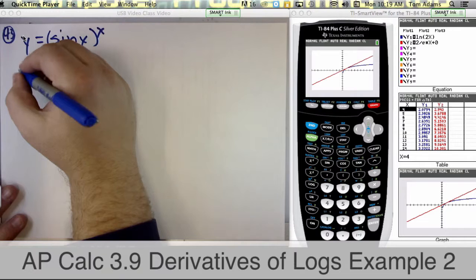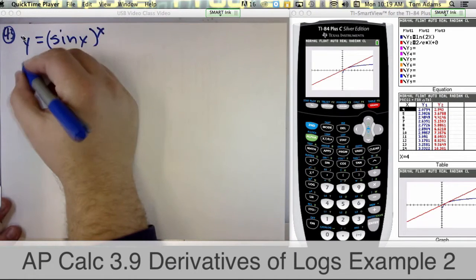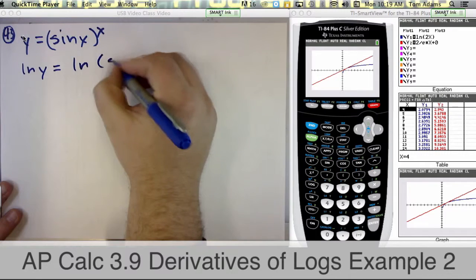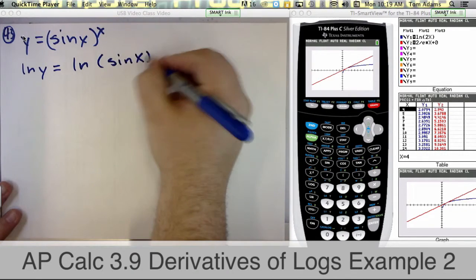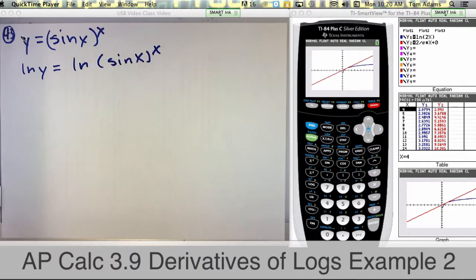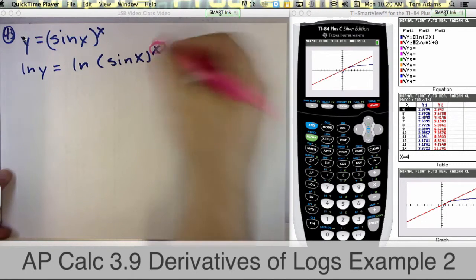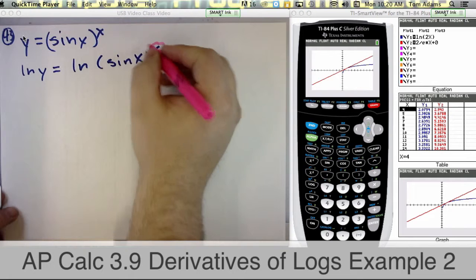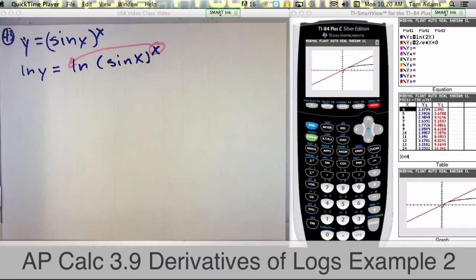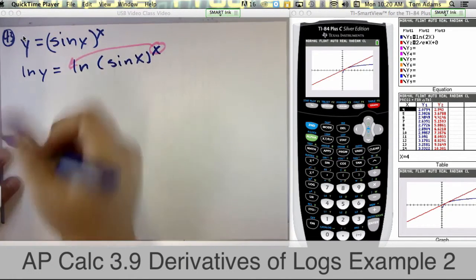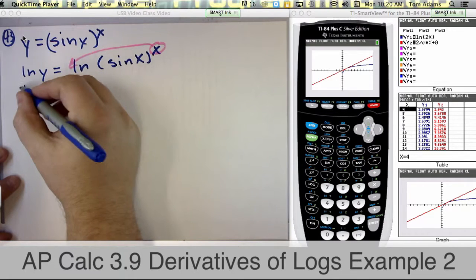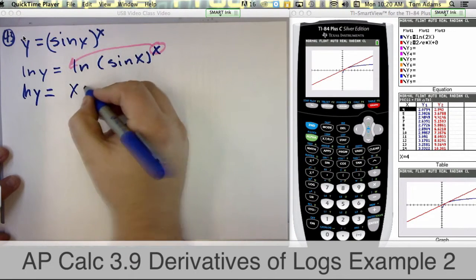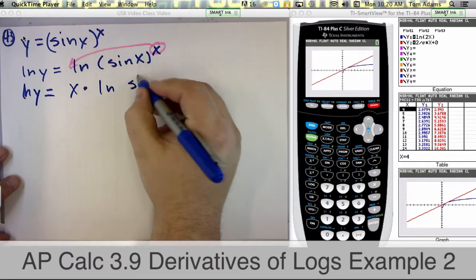But since this section is on logs, what we're going to do is we're going to take the natural log of both sides like this. Now, one of the properties of logs, if you remember, is that when I have something raised to a power, I could take that power and toss it to the front. So what we're going to do is we're going to do that. So in the next step, I have the natural log of y is equal to x times the natural log of sine of x.